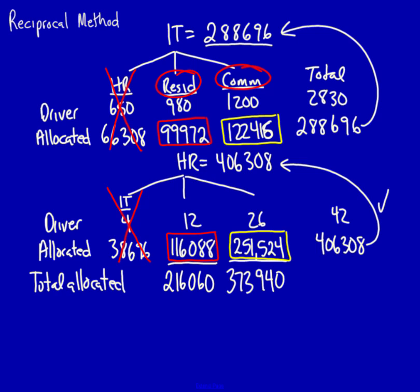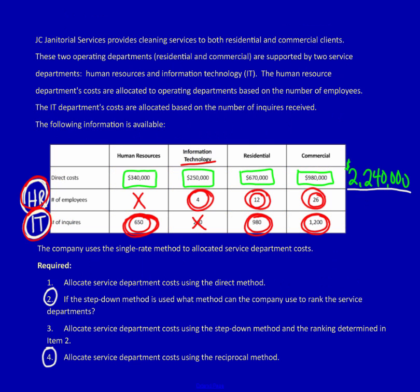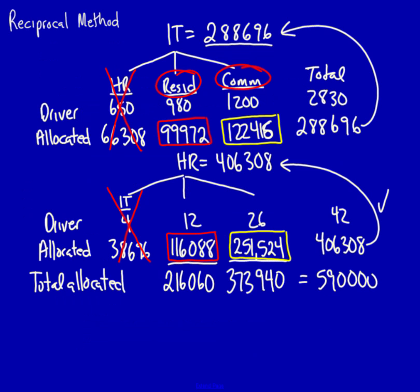If I add these two amounts together, they better equal 590,000. Why do I need 590,000? Well, we quickly jump back here and 590,000 would be the 340,000 plus the 250,000. It would show that I have allocated 100% of my service department costs into the operating departments. And in this case, I have.